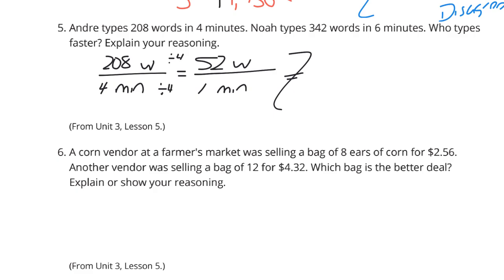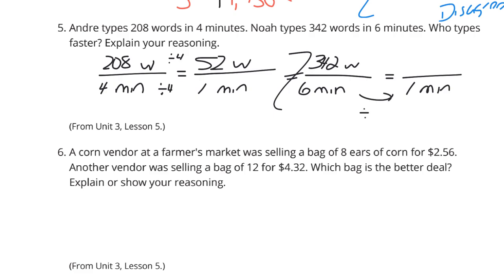52 words per minute is pretty good typing. Now for Noah: 342 words over 6 minutes. Divide by 6 to get to 1 minute, so 342 divided by 6 gives 57 words per minute. And 57 words per minute is faster than 52 words per minute. So the winner is Noah.